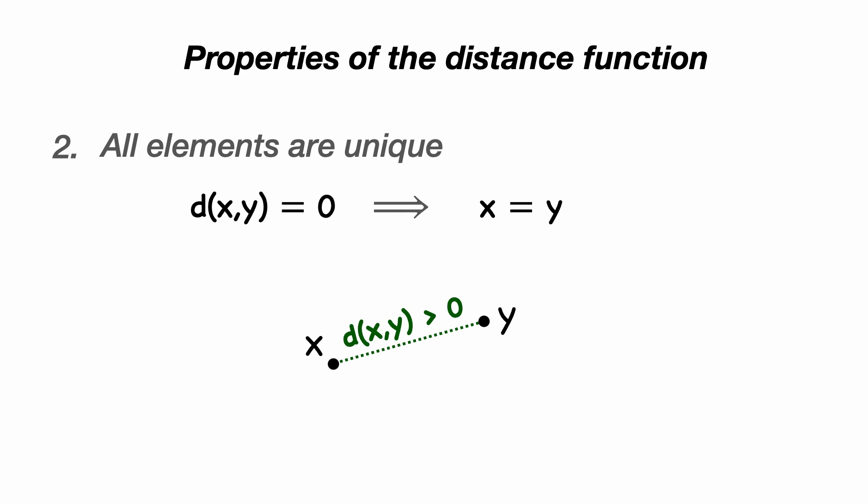Secondly, all the elements in a metric space are unique, and we can write that as the distance between x and y equals zero implies that x is equal to y. So intuitively, what we're saying is that if we start at x and travel to any other location y in our metric space, then the distance we've traveled must be greater than zero.